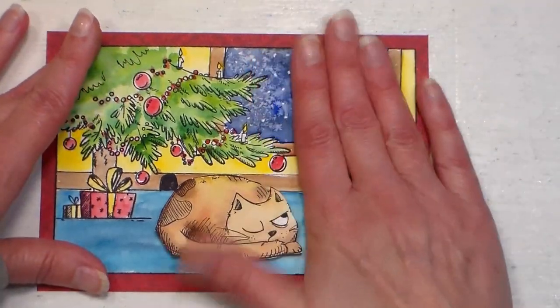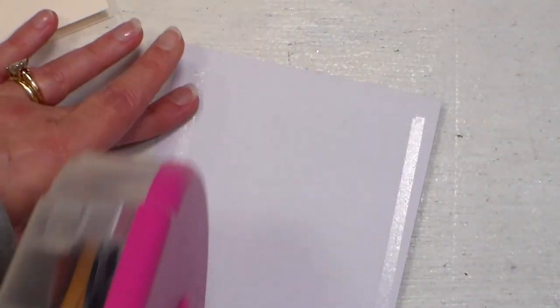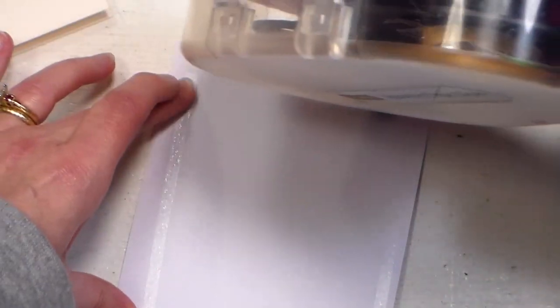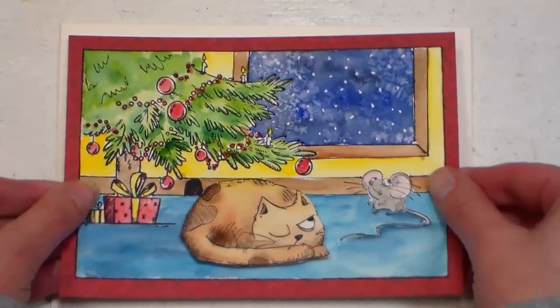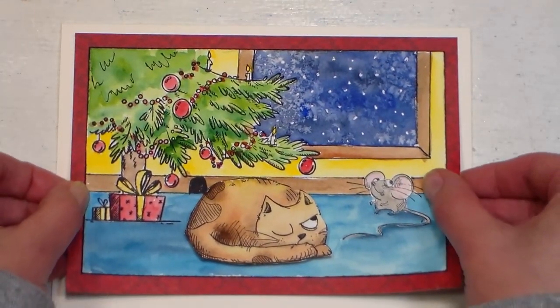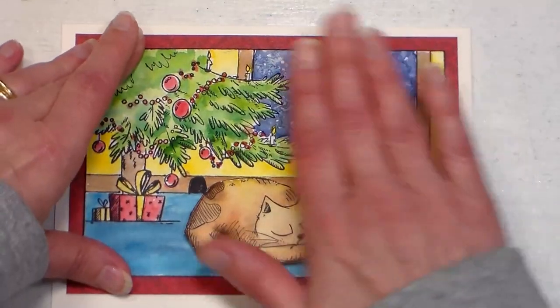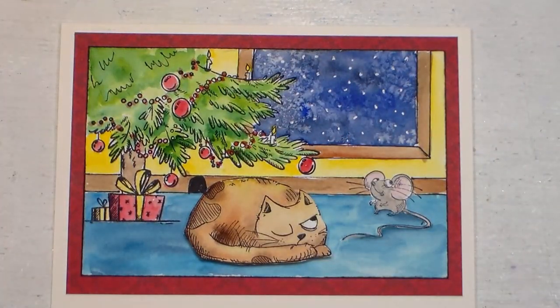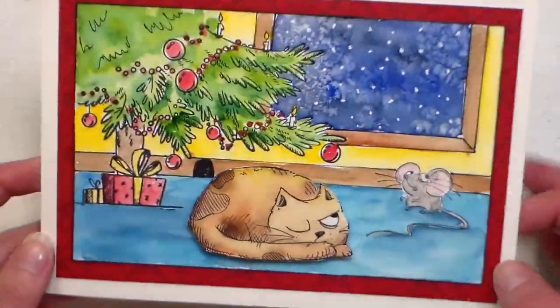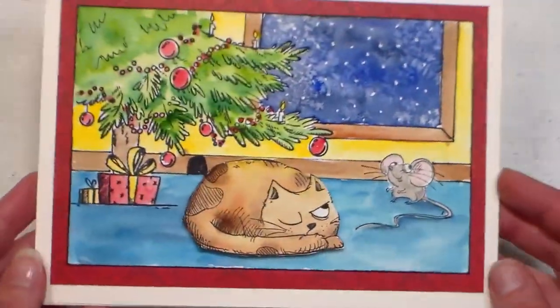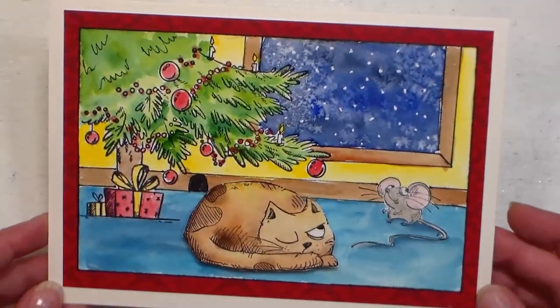And then I centered up that 4 by 6 panel on a 4 and a half by 6 and a half inch red piece of damask pattern paper, and now I'm going to center that up onto a 5 by 7 cream card base. I like to make my own card bases because I find ones that I buy pre-made are kind of flimsy, and what I like to use for my cardstock is the 110 pound or 120 pound, the really heavyweight cardstock you can get at the big box craft stores. I've picked some up at Joann's and at Michael's that work really well. I'm sure there are other stores that carry them, those are just the only two that I've used personally, and there you have it. It's a nice sturdy card that I think would bring some cheer to anyone's holiday time of year.